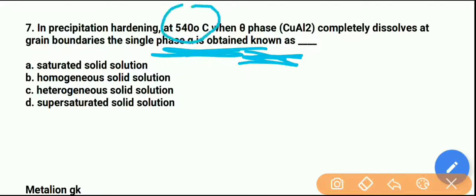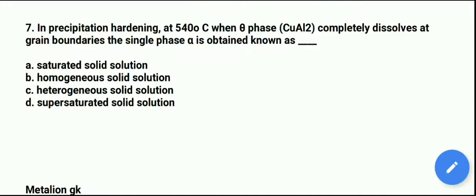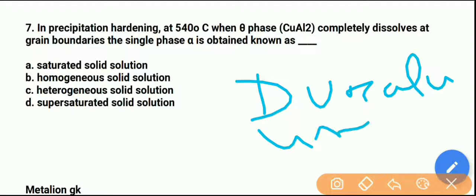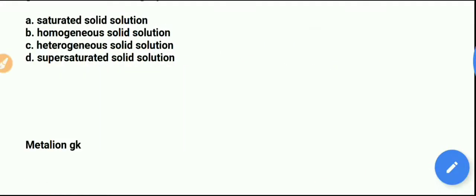The right answer is option C. Remember: Duralumin — you have to remember the formation of Duralumin. What happens in a single phase? It forms a homogeneous solid solution. So option B is the right answer for question number 7 — homogeneous solid solution.